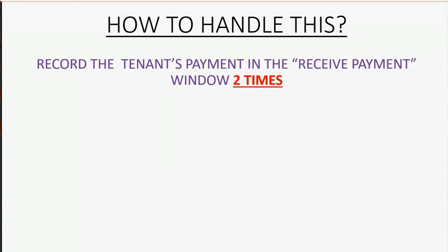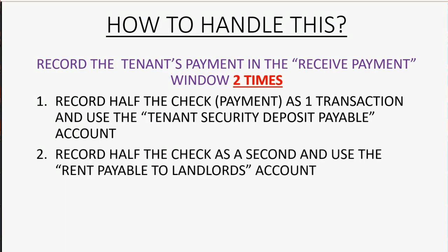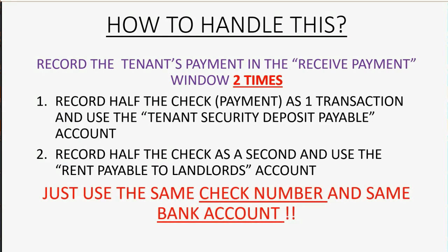So how do you handle this? You would record the tenant's payment in the received payments window two times. First, record half the check as one transaction using the tenant's security deposit payable account. Then record the other half as a second transaction using the rent payable to landlord's account. Make sure you put in the same check number and record it in the same bank account, because physically it's one check going into one account.